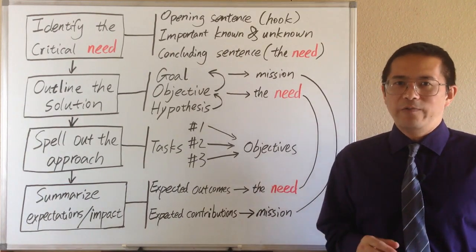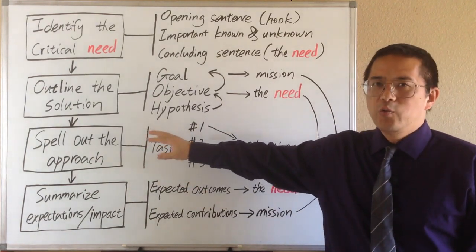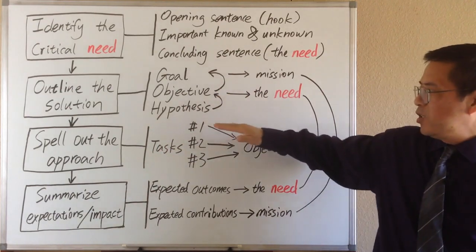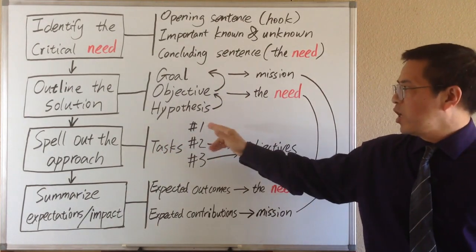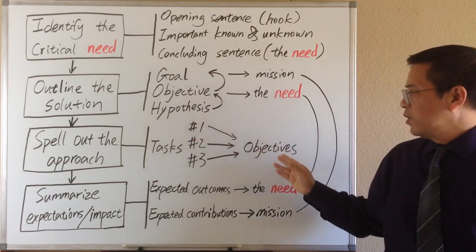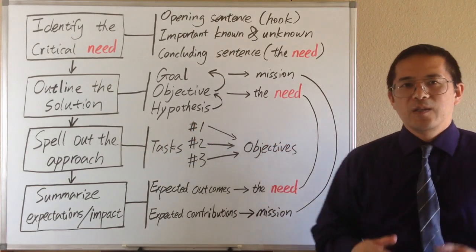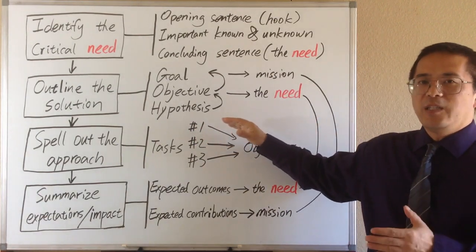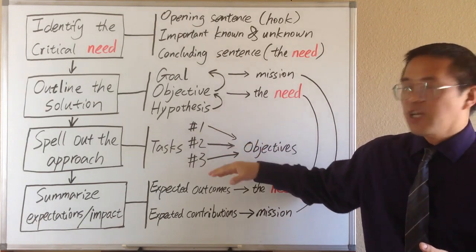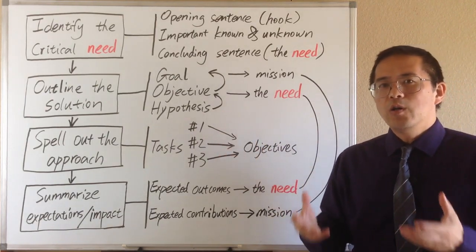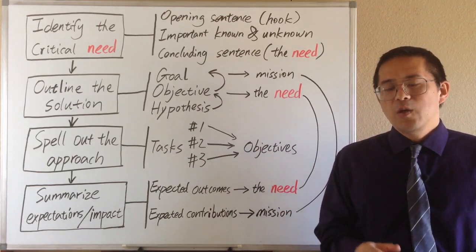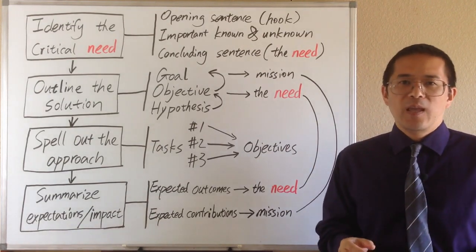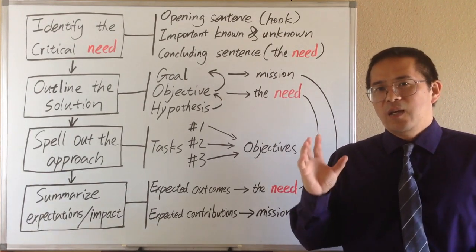In the third paragraph, we spell out the approach to realize the objectives defined in the second paragraph. We may list specific tasks, and each task should serve one of the objectives. It would be nice to avoid having the feasibility of one task be dependent upon the outcome of other tasks — that would make our plan more robust. Sometimes we may need to identify potential challenges or pitfalls, and make contingency plans accordingly.